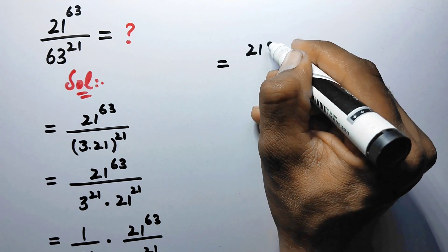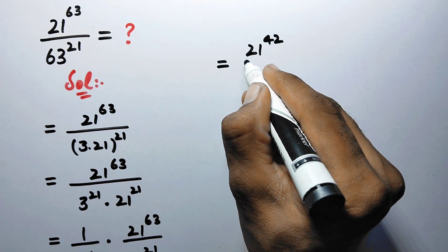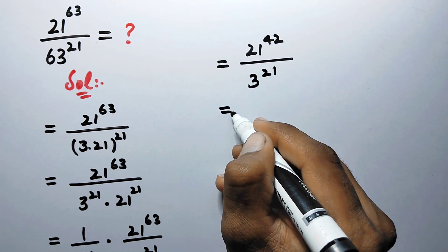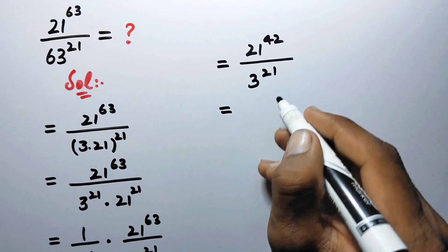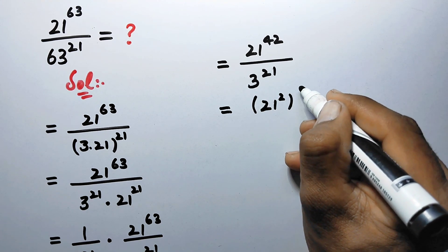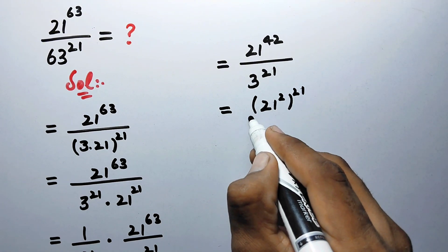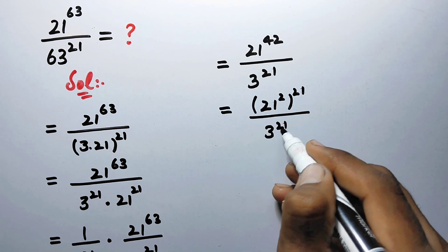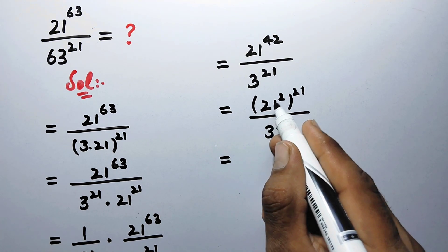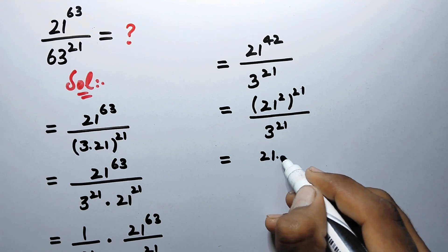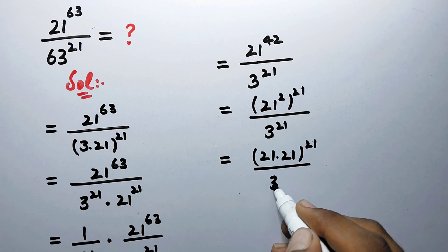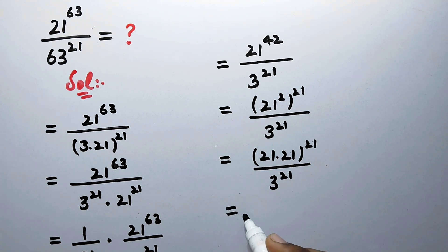We rewrite the fraction as 21 to power 42 divided by 3 to power 21. We can split the power as 21 to power 21 times 21 to power 21, which can be written as 21 times 21 to power 21, divided by 3 to power 21.